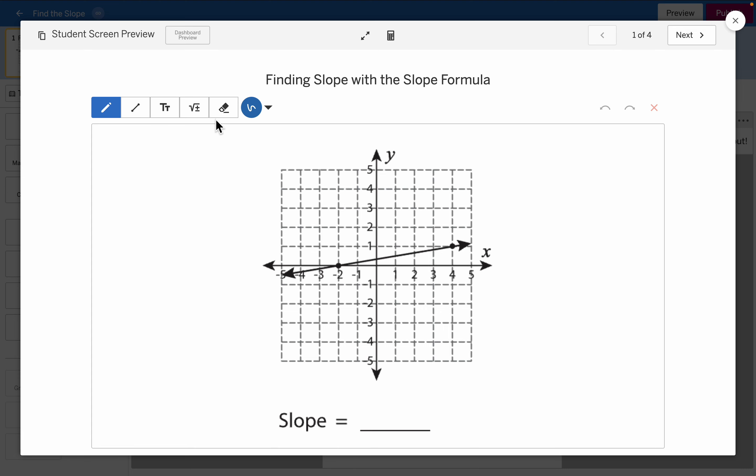The slope formula is actually, we'll use M to denote that, is, and we'll use M to refer to the slope. It is the difference of the Y values, which I'm going to call Y2 minus Y1, divided by the difference in the X values, which is going to be X2 minus X1.